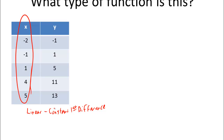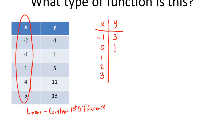Let's do one more table. We'll put in x values: negative 1, 0, 1, 2, 3, with y values 3, 1, negative 1, 1, 3. Let's see if we can figure out what these are. First, we'll check linear — constant first difference. So: 1 minus 3 is negative 2; negative 1 minus 1 is negative 2; 1 minus negative 1 is positive 2; and 3 minus 1 is positive 2. The first difference is not the same, so it's not linear.